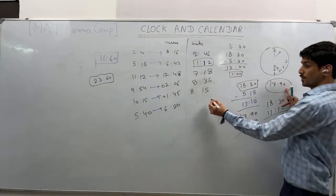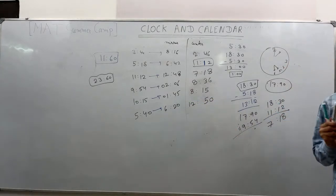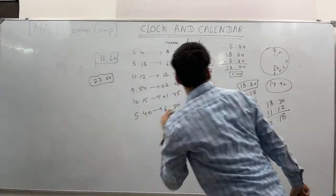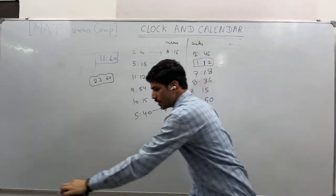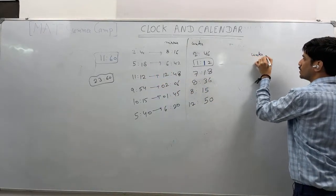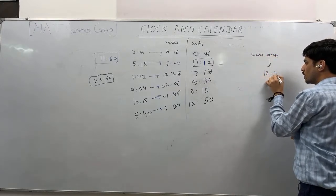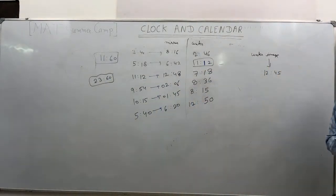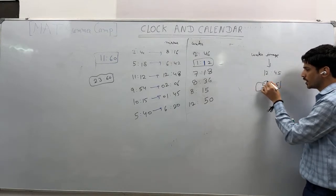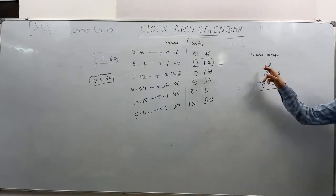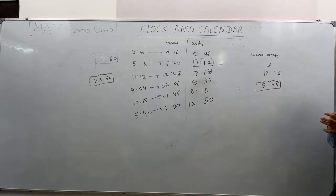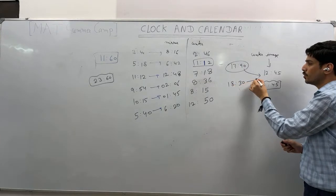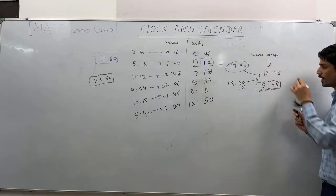Reverse water image problem: if water image is given as 12:45, find the actual time. The actual time is 5:45, because 18:30 − 5:45 would not work (minutes > 30), but 17:90 − 5:45 = 12:45 checks out. There is only one valid possibility, so the actual time is 5:45.